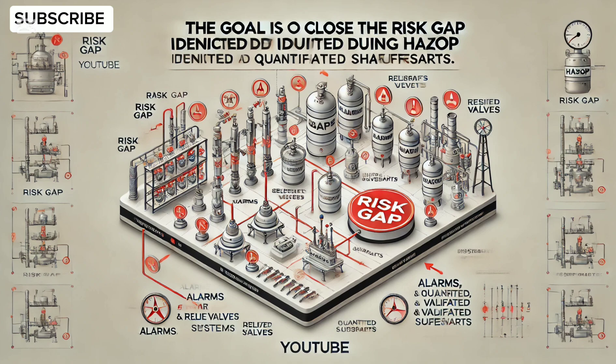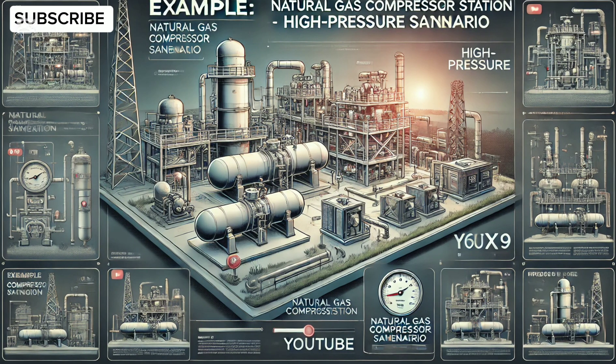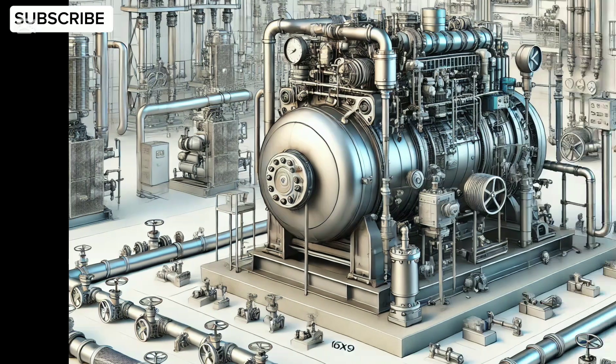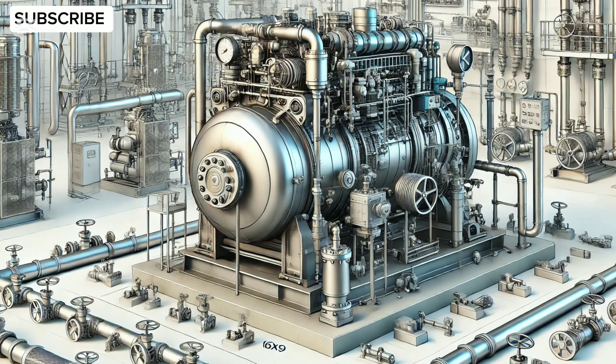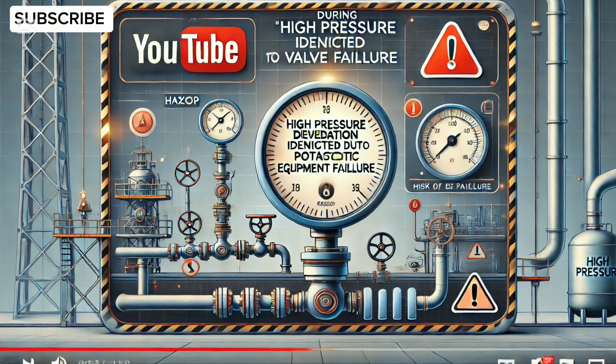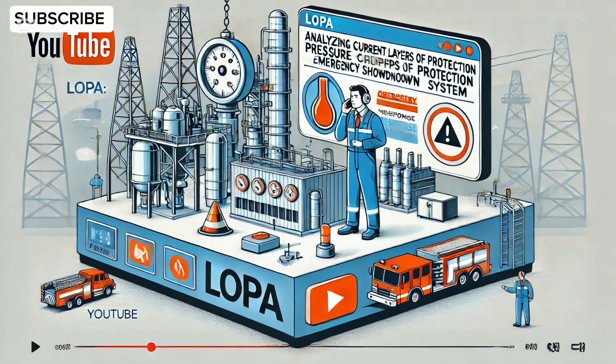Let's take an example of a natural gas compressor station with a high-pressure scenario. During HAZOP, a deviation of high pressure is identified due to potential valve failure, leading to catastrophic equipment failure. LOPA analyzes the current layers of protection: a pressure relief valve, operator response to high-pressure alarms, and an emergency shutdown system.